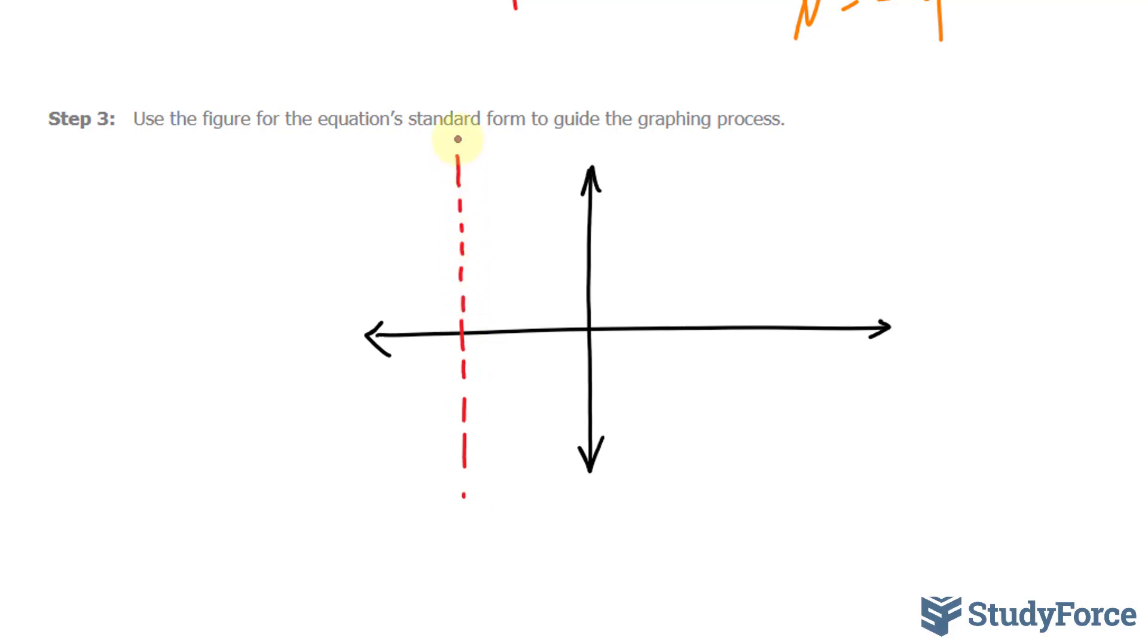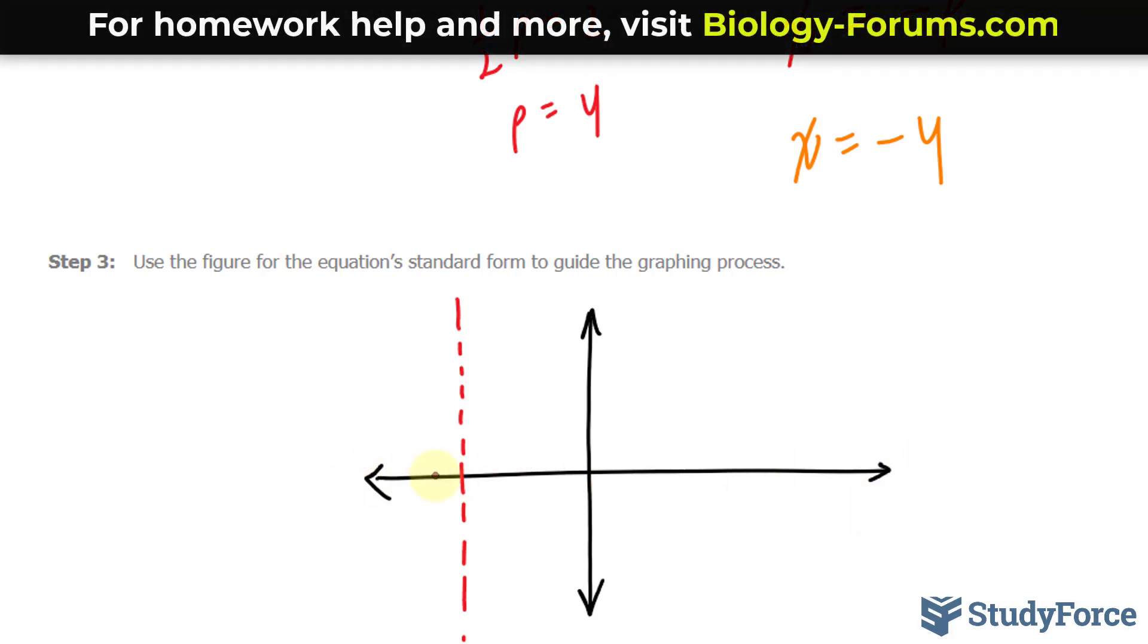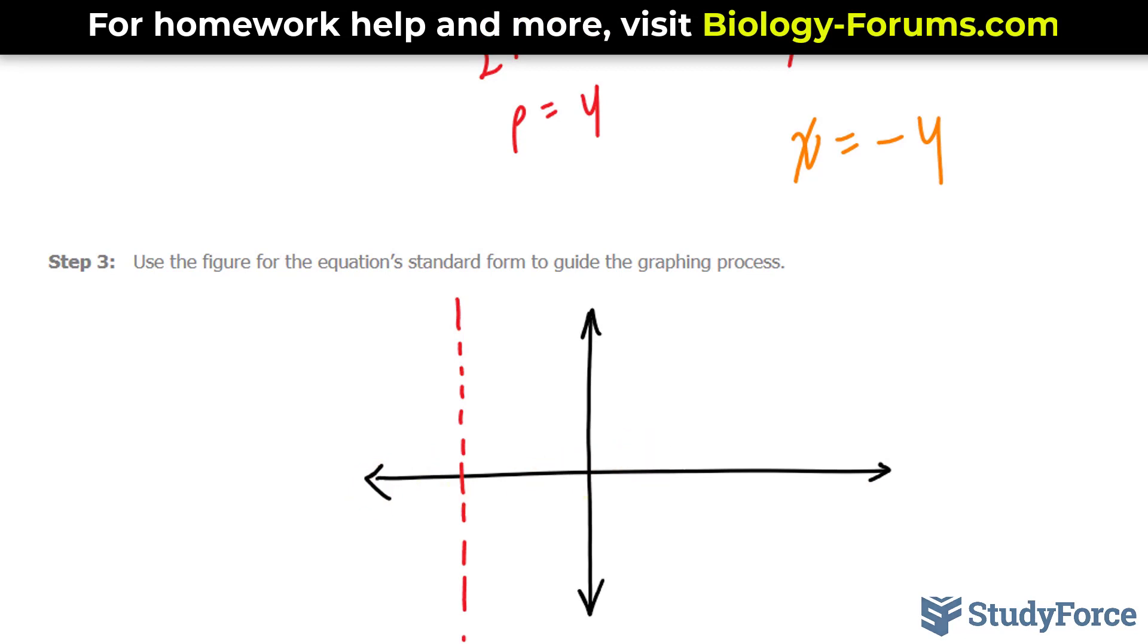And an ellipse has 2 vertices, so that's what we need to find out next. We need to find out the vertices. Now because our equation suggests that our major axis is along the horizontal, the vertex will be at an angle of 0 and an angle of pi.